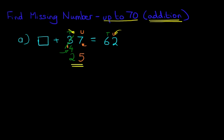And that is our answer, 25. Let's write this down. 25 plus 37 equals 62. And that really was very simple.